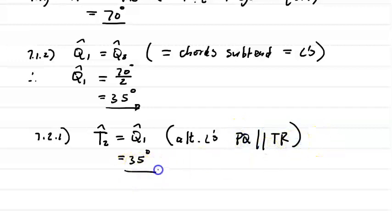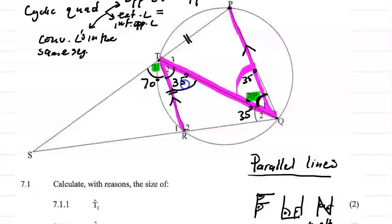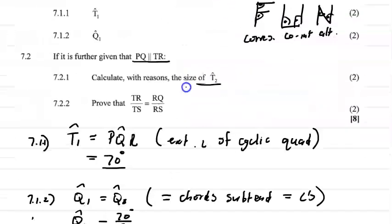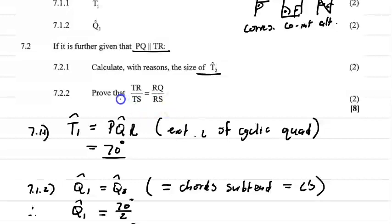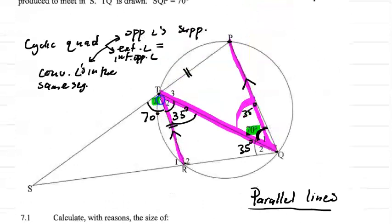For question 7.2.2, prove that TR over TS equals RQ over RS. Let's look at that carefully. We need to identify TR, TS, RQ, and RS in the diagram.